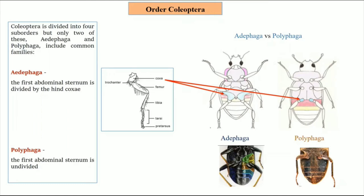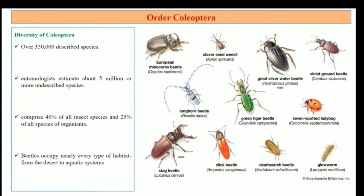Coleoptera is divided into four suborders, but only two of these — Adephaga and Polyphaga — include the common families. The diversity of Coleoptera includes over 350,000 described species. Entomologists estimate about 5 million or more undescribed species, comprising 40 percent of all insect species and 25 percent of all species of organisms.